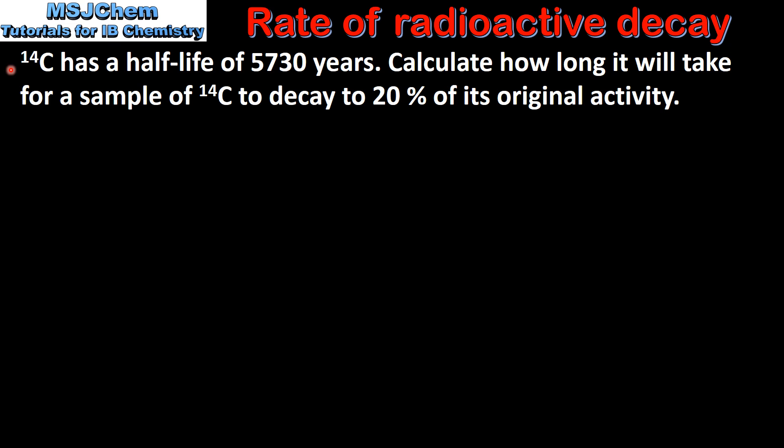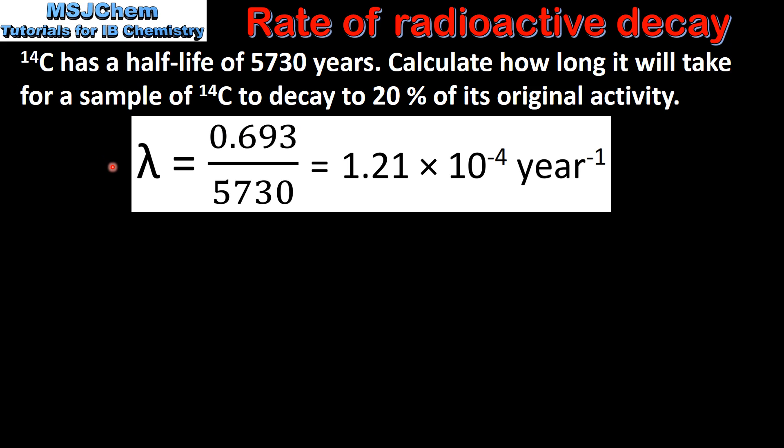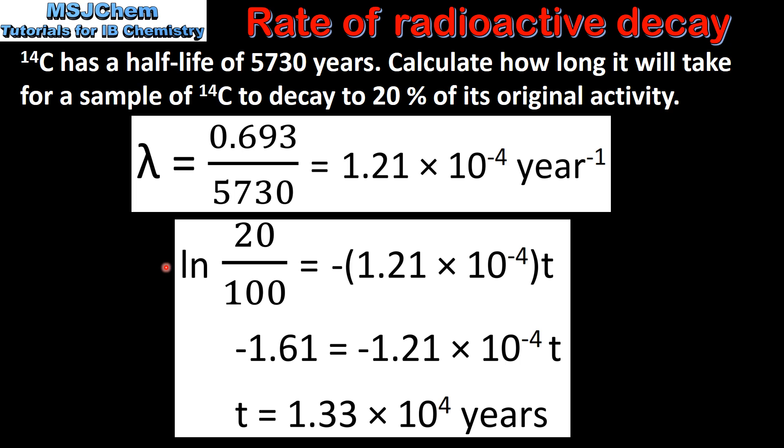Carbon-14 has a half-life of 5730 years. Calculate how long it will take for a sample of carbon-14 to decay to 20% of its original activity. First we calculate the decay constant. Next we'll use the integrated form of the rate equation.